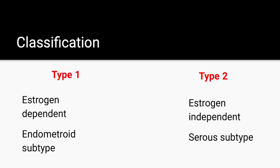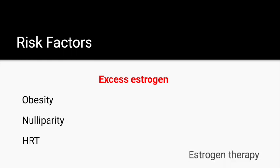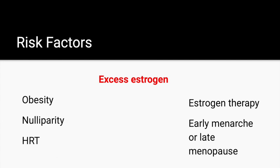Questions about risk factors are a favorite for the Step 2 CK exam and the OB/GYN shelf. Excess estrogen is the major risk factor for the development of endometrial hyperplasia and endometrial cancer. Risk factors include obesity, nulliparity, hormone replacement therapy, estrogen therapy, early menarche, late menopause, and chronic anovulation — where there is unopposed estrogen secretion, as occurs in patients with PCOS.